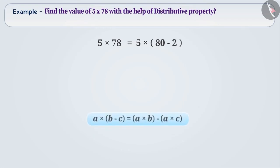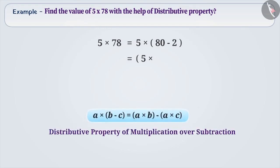This can be written as (5 into 80) minus (5 into 2), by the distributive property of multiplication over subtraction. Solving this, we get 400 minus 10, which equals 390. Therefore, by using the distributive property, we can find the solutions very easily.